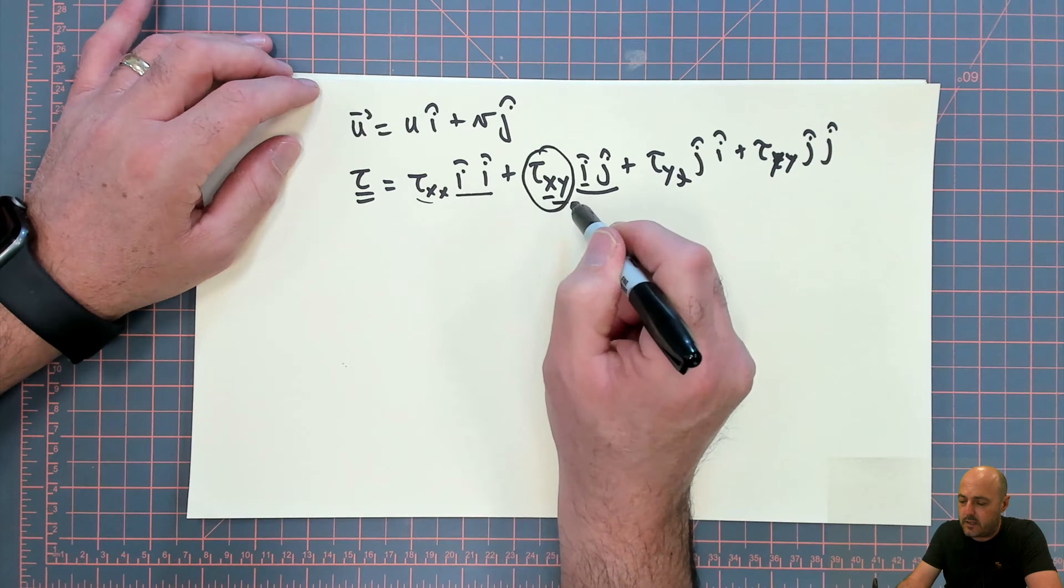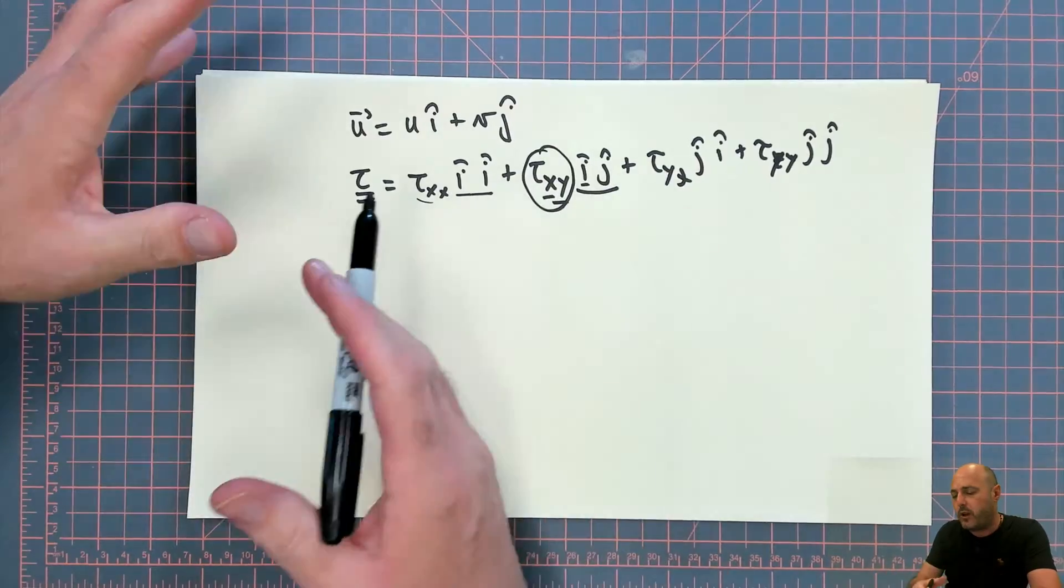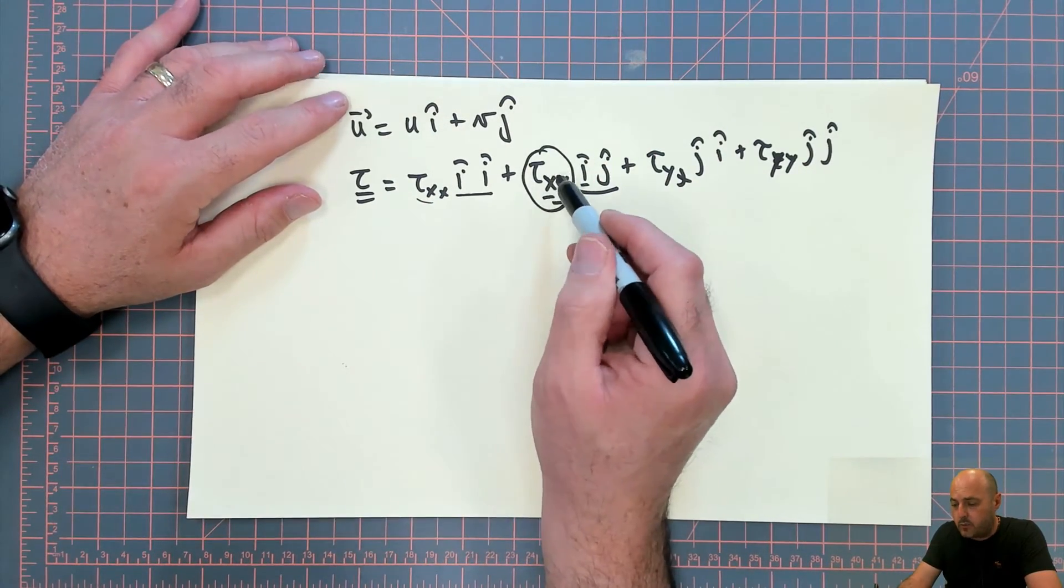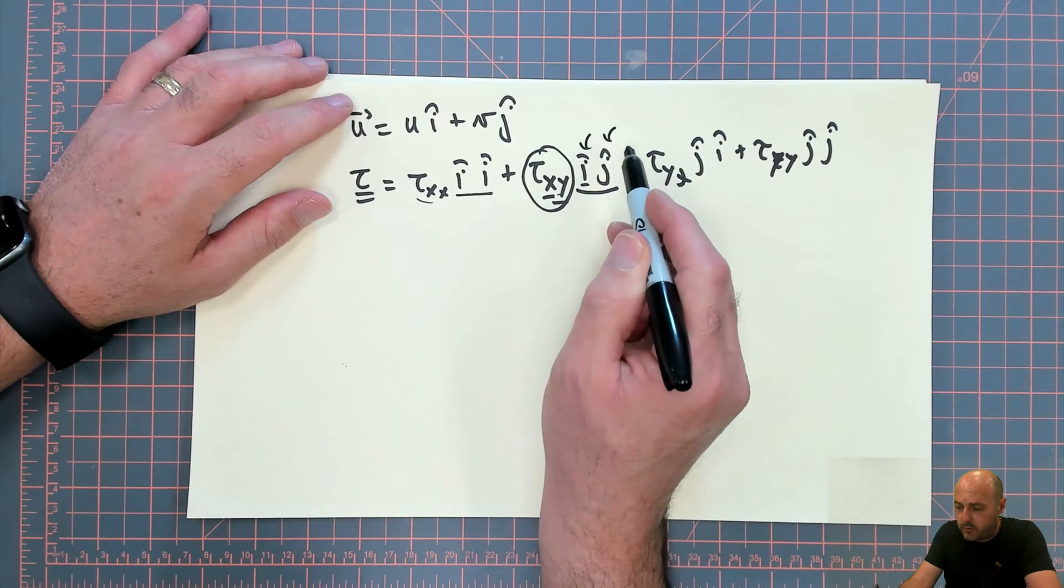Now, you might say, well, you have the indices here. Well, I'm having these indices because they just help me track which component belongs to a direction, but these indices do not, these indices themselves do not contain directional information.